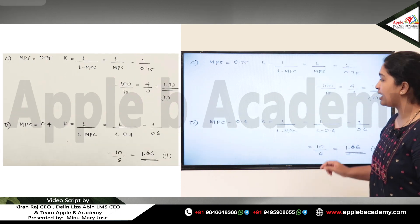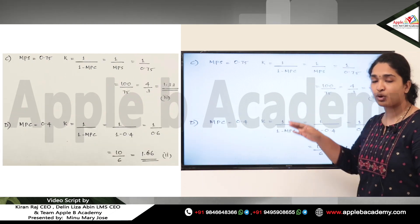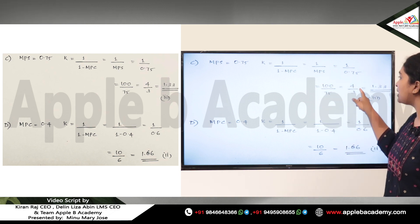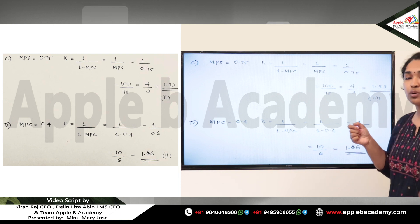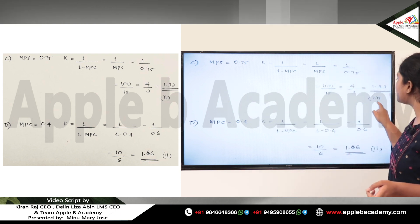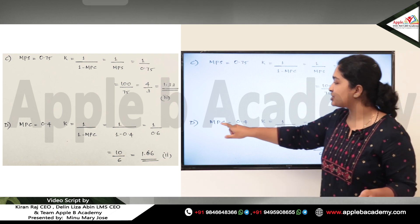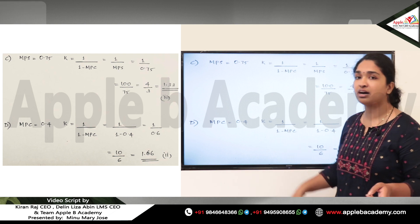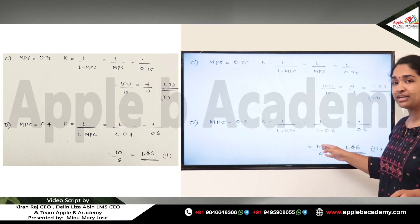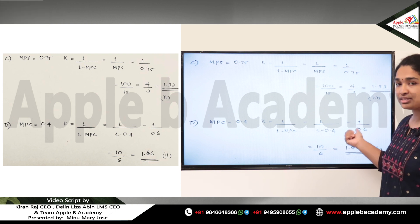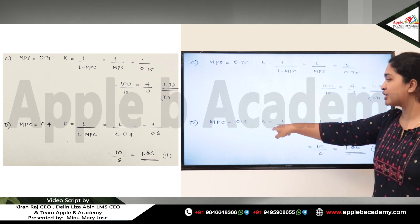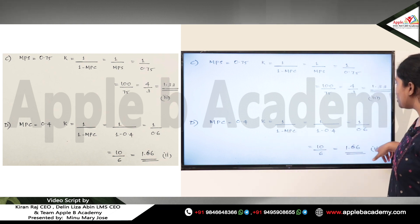For Option C, MPS is equal to 0.75. Substituting: 1 divided by 0.75 gives 1.33, so Option C from List 1 matches with Option 3 from List 2. For Option D, MPC is equal to 0.4. Using K = 1 divided by (1 minus MPC), we get 1 divided by 0.6, which equals 1.66, so Option D matches with Option 2 in List 2.